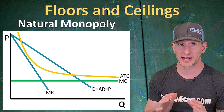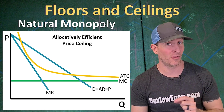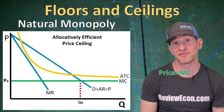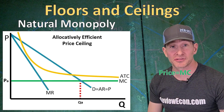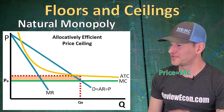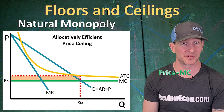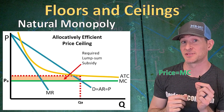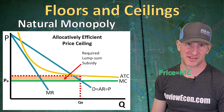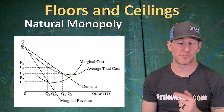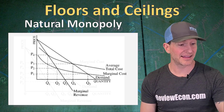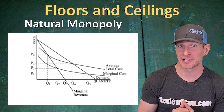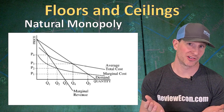Now, if the government wanted to eliminate all deadweight loss, they could put a price ceiling at the allocatively efficient point — where price equals marginal cost. That gives us QA as the allocatively efficient quantity and there is no deadweight loss. But you'll notice the average total cost curve is above the price at that quantity, so we will have a rectangle of economic loss for this natural monopoly. If this natural monopoly is going to stay in business, it must be compensated, and the government will have to provide a lump sum subsidy. Of course, this is just one way to draw a natural monopoly — there are variations where the MC curve eventually intersects ATC, or where they never intersect. Choose whichever version your teacher prefers.